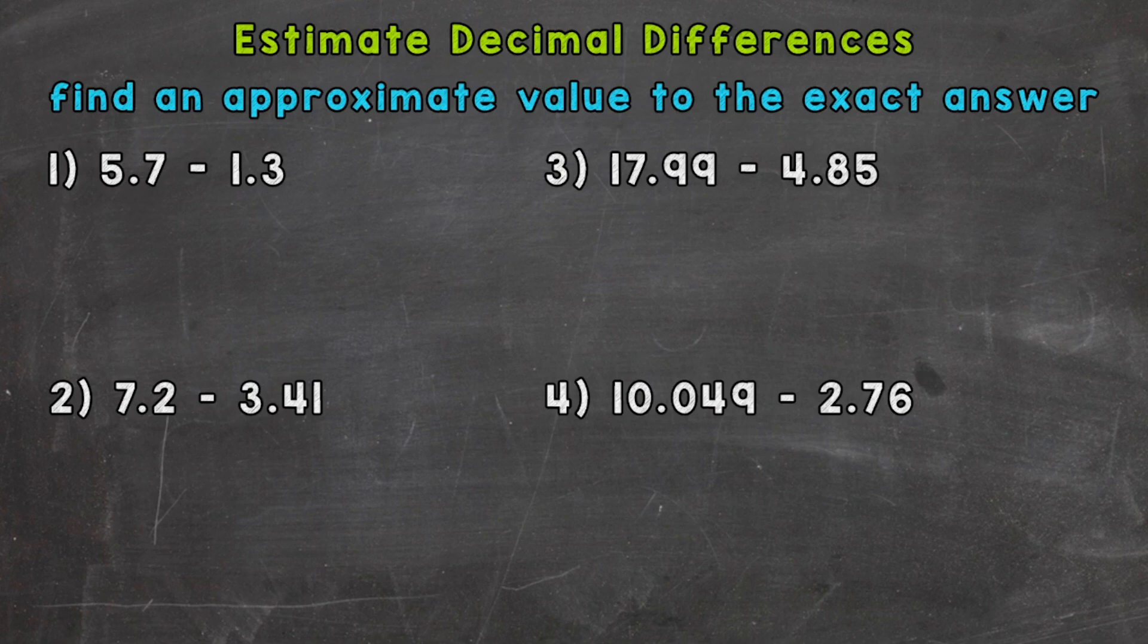Let's jump into number one where we have 5.7 minus 1.3. The first thing we need to do is round each of these decimals to the nearest whole number, so the ones place. Let's take a look at 5.7 first. We will underline the digit in the ones place, look next door, and that's going to determine how we round this.